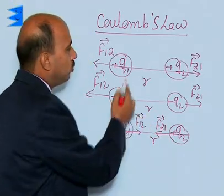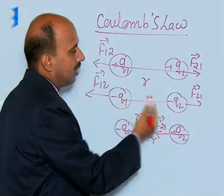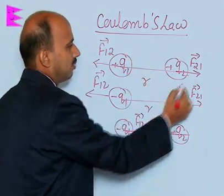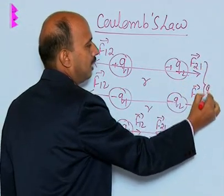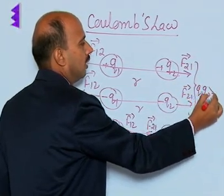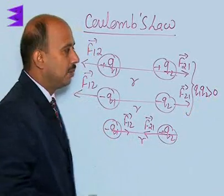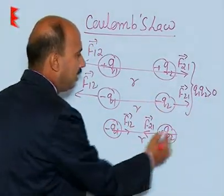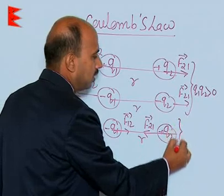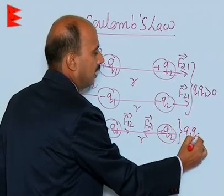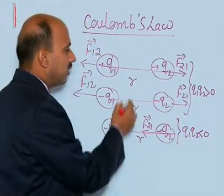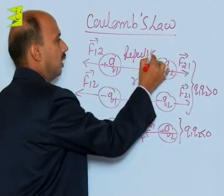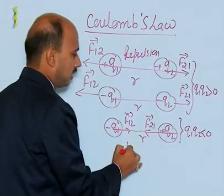So when these two charges are like charges, there is repulsion. We can say in these two cases Q1 and Q2 are both positive or both negative, so Q1 × Q2 is greater than 0. In the case of unlike charges, Q1 × Q2 is less than 0. So in the first case there is force of repulsion and in the second case force of attraction.